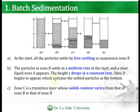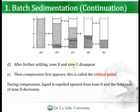Zone D begins to appear at the bottom containing the settled compacted particles. Zone C is the transition layer whose solids content varies from that of zone B to that of zone D. After further settling, zones B and C disappear. During compression, liquid is expelled upwards from zone D and the thickness of zone D decreases. The point where compression first appears is called the critical point.